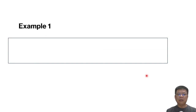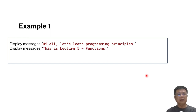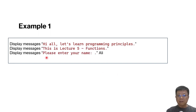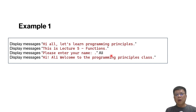Let's look at the first example. We are going to create a program to display the message 'Hi all, let's learn programming principles,' then display a second message, a third message, get input from the user, and then display the output message. So how are we going to create the functions for it? We will discuss in the coding part — let's do it together.